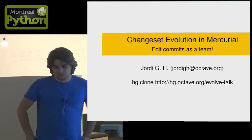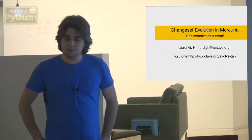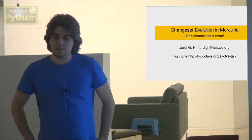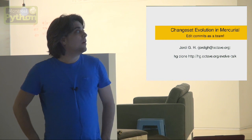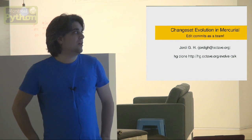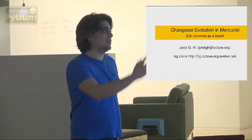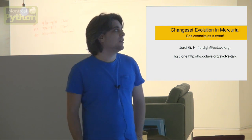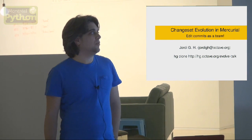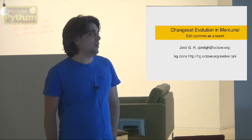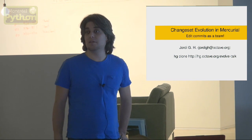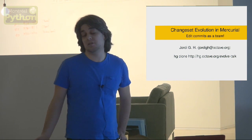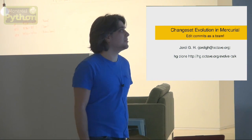The idea of changeset evolution is that you can edit commits together as a team. If you want to follow my talk, there is a URL that you can clone: hg clone hg.octave.org/evolve-talk. That's the repo for this talk where the source code is, just in case you're curious.